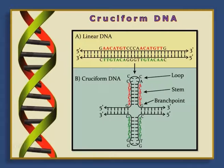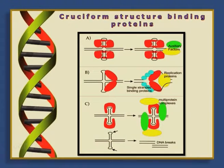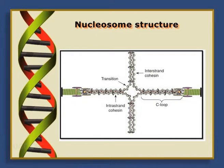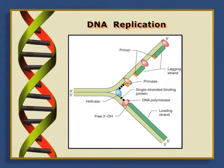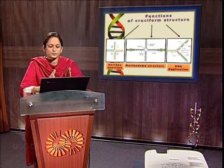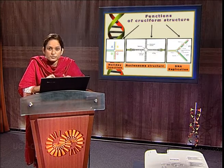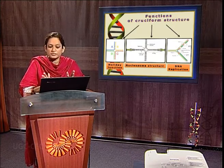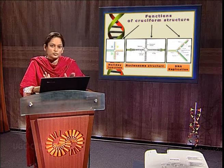The cruciform structure is recognized by proteins. These proteins play a very important role during DNA recombination, in formation of nucleosomes, and during DNA replication and repair. So the cruciform structure is involved in these three physiological processes — namely recombination, nucleosome formation, and DNA replication. If there is malfunctioning of the cruciform structure, it has been implicated in diseases like Werner's syndrome.